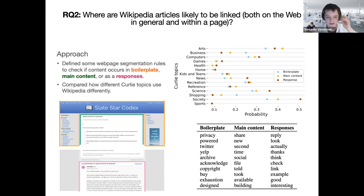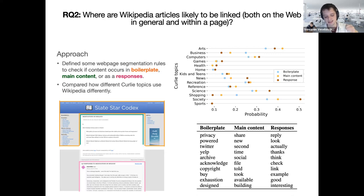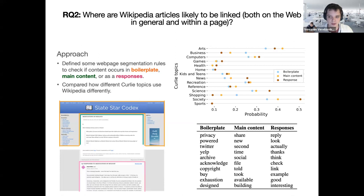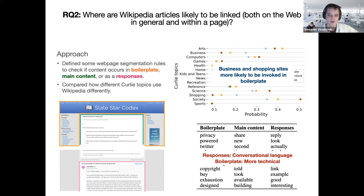We augment this by looking at individual web pages, defining HTML structural rules to roughly segment whether a link occurs in the boilerplate, the main content, or the references. We see that sites underrepresented in Wikipedia sharing — like business and shopping — tend to link to Wikipedia more in the boilerplate. Sites like science and society tend to link Wikipedia more in responses, which are usually comments. Arts, kids and teens, and recreation tend to link to Wikipedia more in the main content. We also looked at the language used in each category — responses use more conversational language, while boilerplate tends toward more technical language.